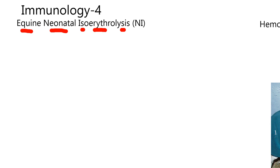NI is an acronym — sometimes you'll see it listed as neonatal isoerythrolysis. So in the newborn foal, we're going to have rupture of its red blood cells that, if left unchecked and serious enough, could lead to — would definitely lead to — death.